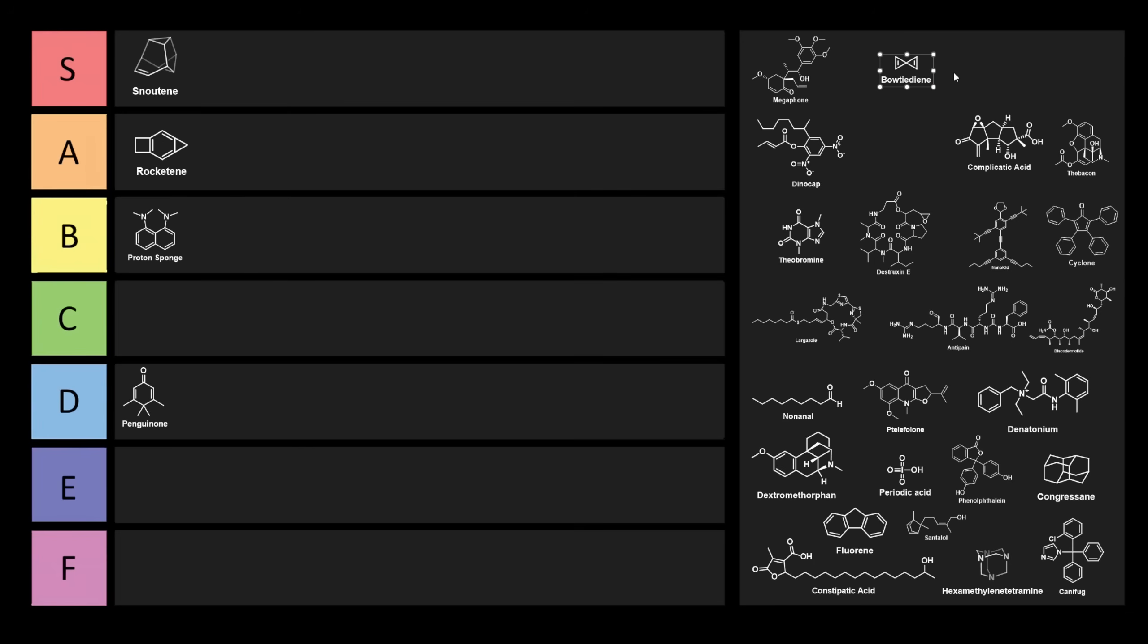Now let's talk about Bowtiediene. I really like the way Bowtiediene looks. I think it's a pretty awesome looking structure, although it's extremely unstable. The other name for Bowtiediene is Spiropentadiene, and I actually like the name Spiropentadiene quite a bit. It is annoying. It's pretty hard to be upset with someone who's wearing a bowtie. So Bowtiediene, I'm not too upset with you. We'll put you into E tier.